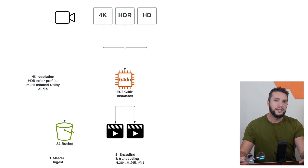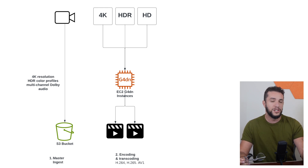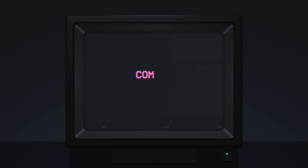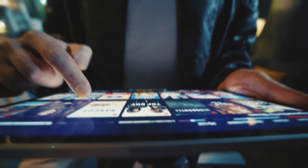From there, Netflix spins up a fleet of EC2 GPU boxes running a forked FFmpeg — the GOAT. For every title, they bake around 50 renditions: H.264, H.265, VP9, AV1, Dolby Vision, with bitrates ranging from 100 kilobytes — old 3G systems — all the way up to 25 megabytes for your Dolby Atmos home cinema.